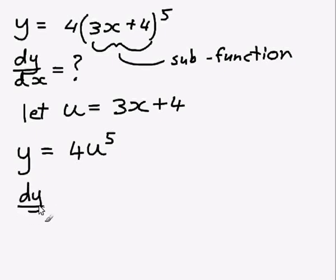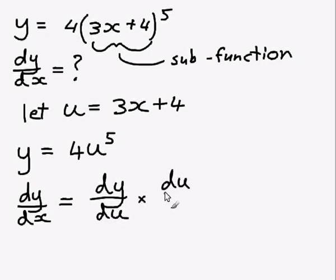The chain rule is this: it says that to work out dy/dx, what you can do is work out dy/du, which is our new variable, and multiply this by du/dx. That will give you your answer. If you treat these just like fractions, you can see that you can cancel out the du's and you just get back to dy/dx, which is what you're trying to find out.